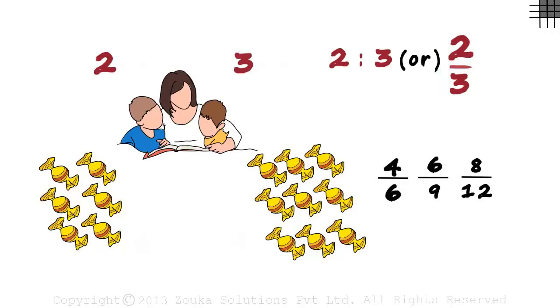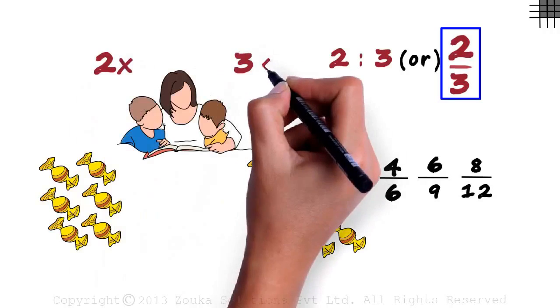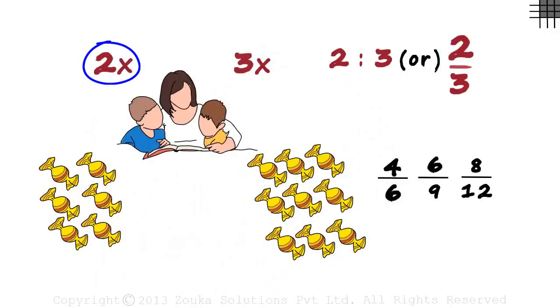If the ratio is 2 by 3, then the quantities will be in the form of 2x and 3x where 2x and 3x are multiples of 2 and 3.